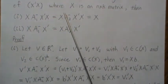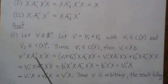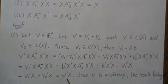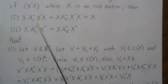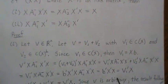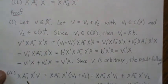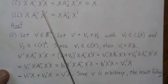This same argument can be repeated with A2-dash, and it will also equal X. So both generalized inverses satisfy X A1-dash X' X = X and X A2-dash X' X = X, meaning all three quantities are equal.